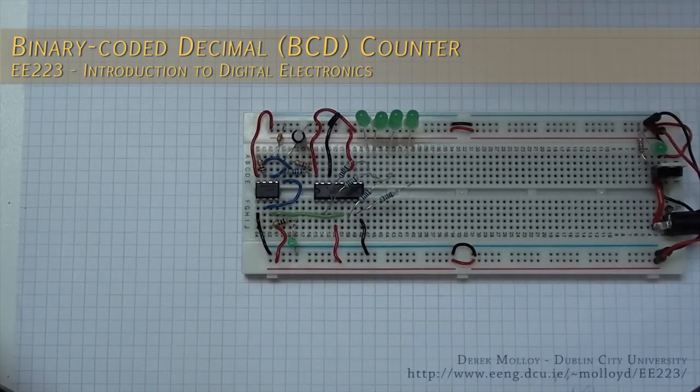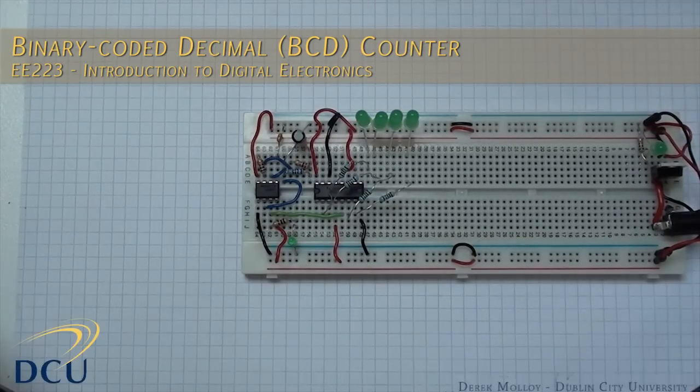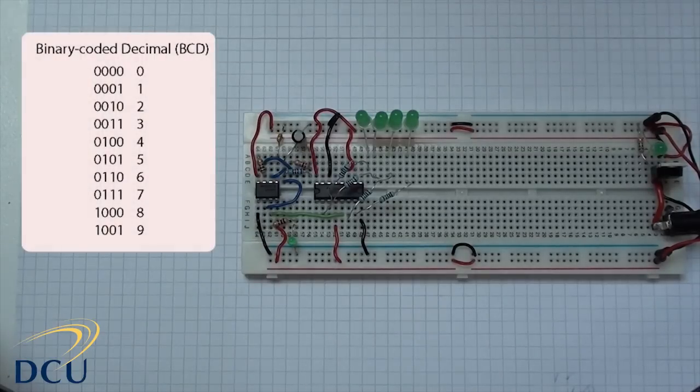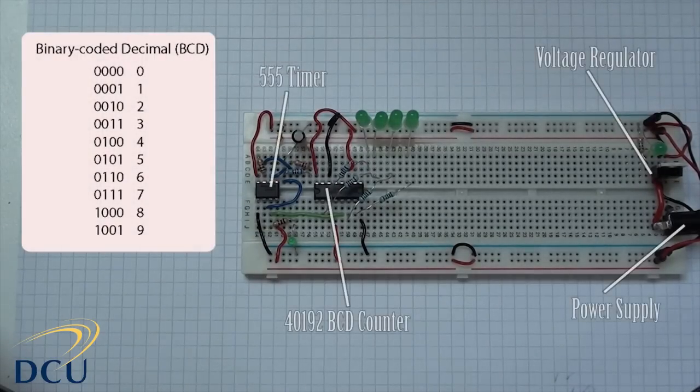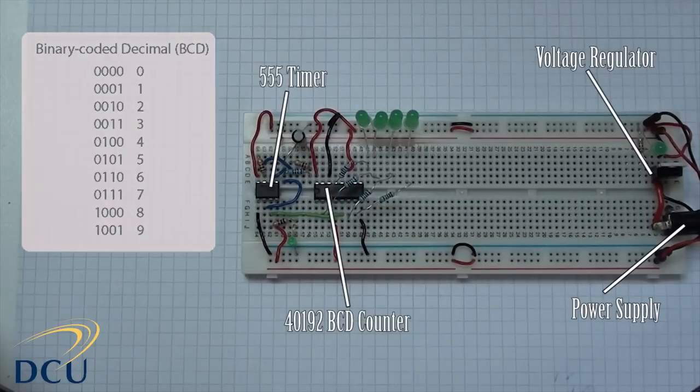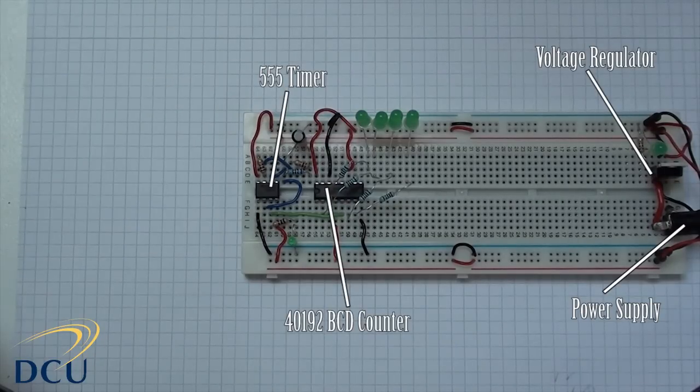This is the circuit that I've implemented using the 40192BE, the BCD up-down counter. I want to wire it up so that it is in up configuration and it's going to count from 0 to 9 and then back to 0 again. So here's the circuit that I connected up.